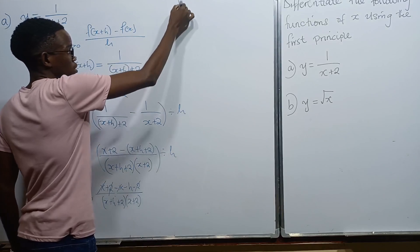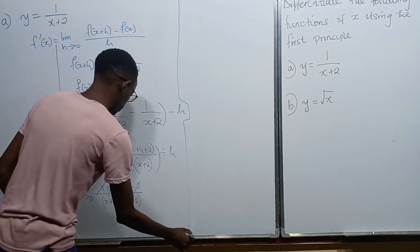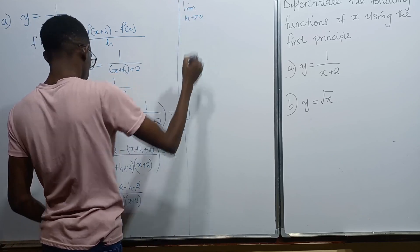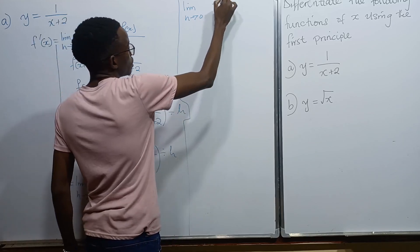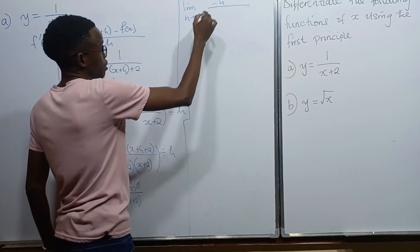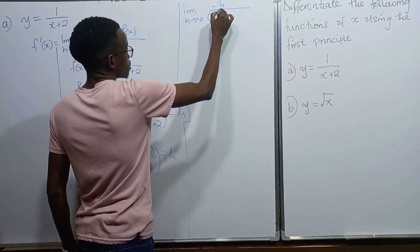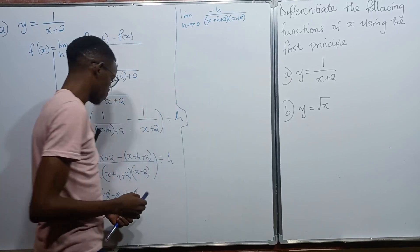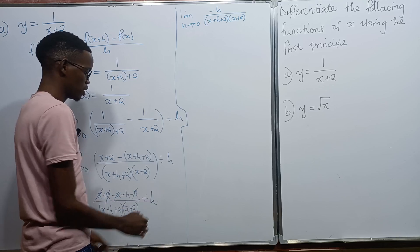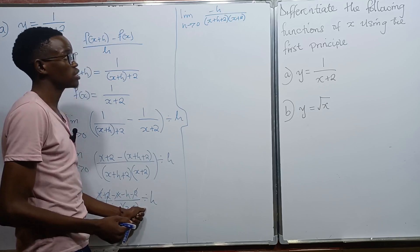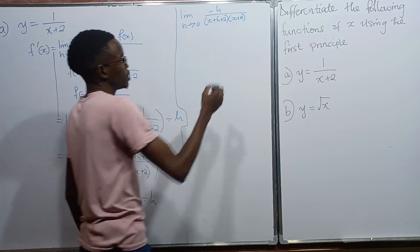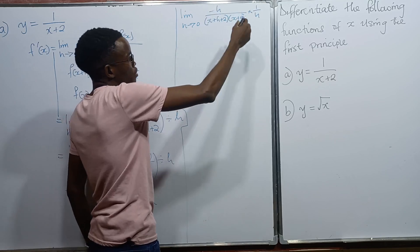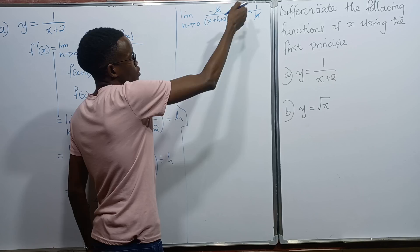After cancellation, we remain with the limit as h approaches 0 of negative h divided by (x plus h plus 2)(x plus 2). Since everything is being divided by h, we multiply by 1 over h. This h cancels with the h on top, leaving us with just 1.